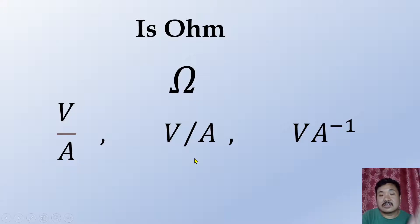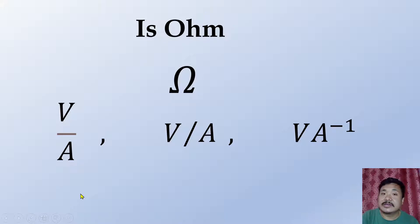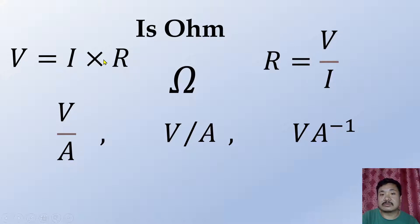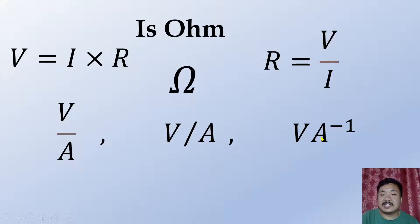Volt per ampere is another unit for resistance. We know that V = IR, so R = V divided by I. Voltage V is in volts and current I is in amperes, so R equals volts per ampere. This can also be written as V·A⁻¹, which is the same as Ohm.